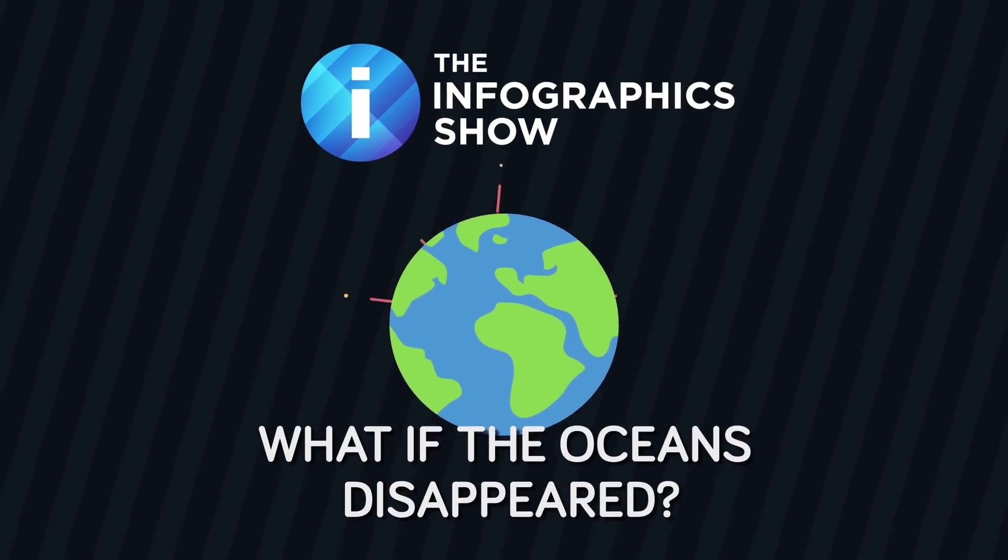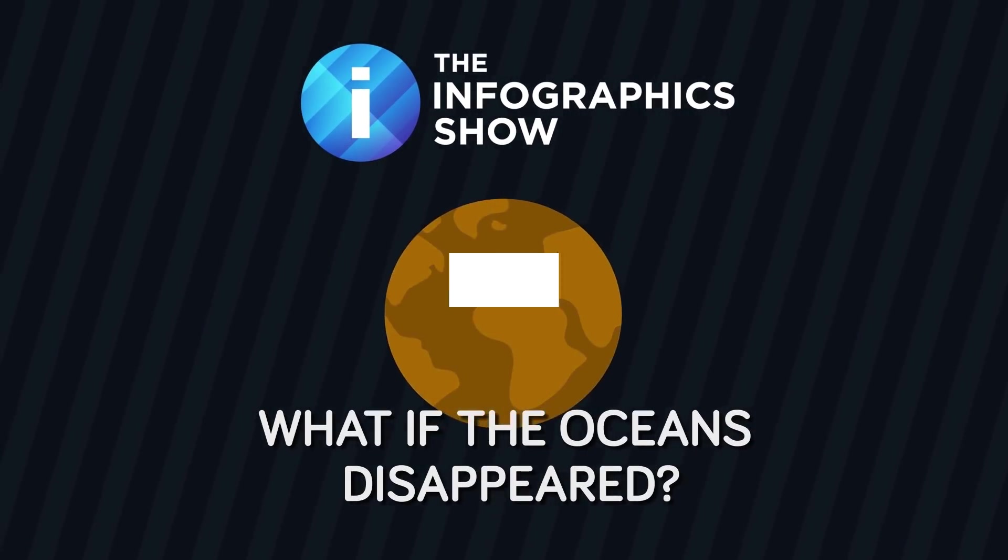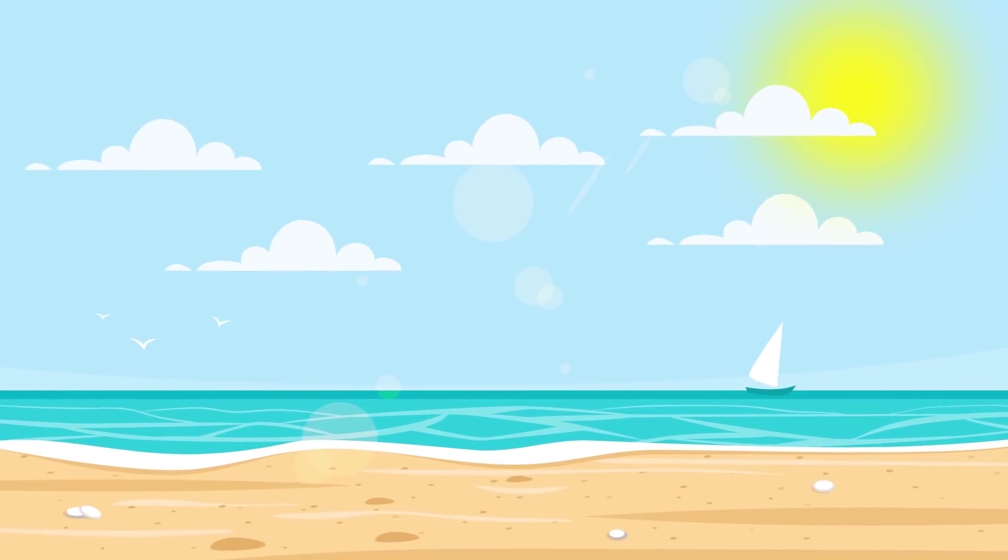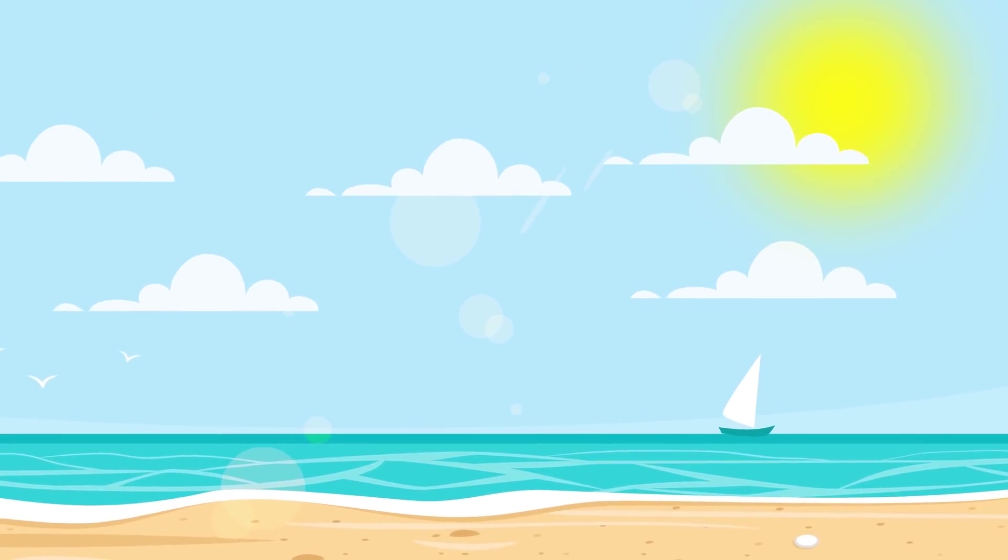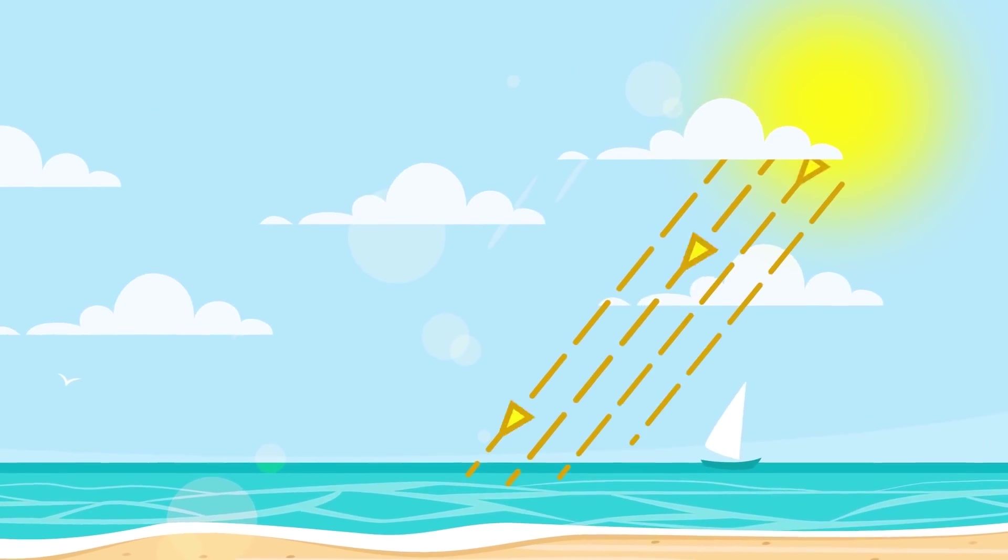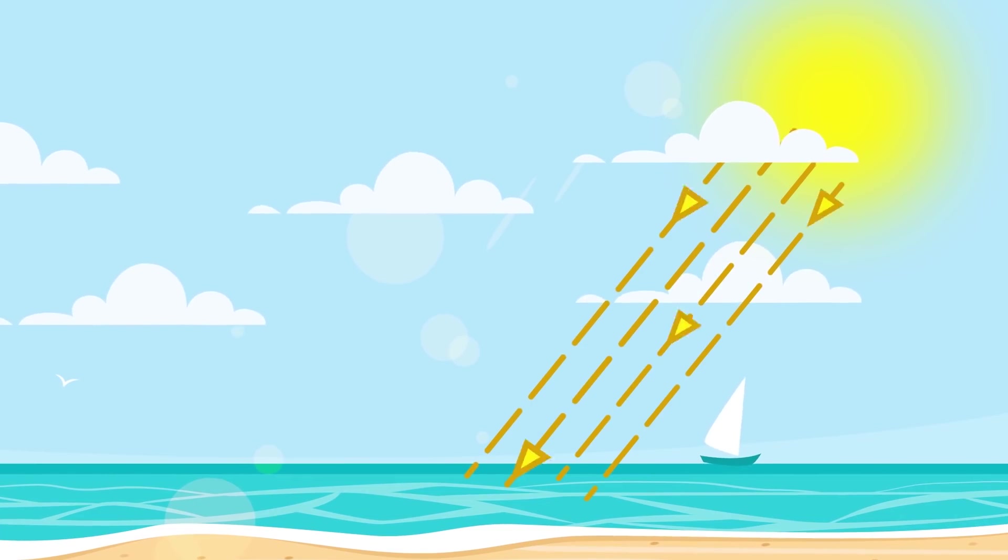But what would happen to life here on Earth if the oceans suddenly disappeared? Earth's oceans are vital for life for two main reasons. First, they absorb and distribute solar radiation, and they help regulate temperatures around the world.